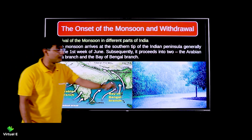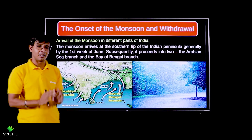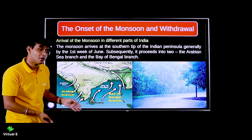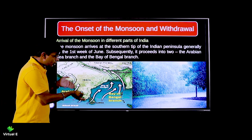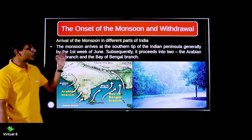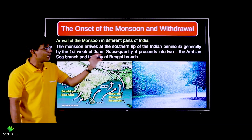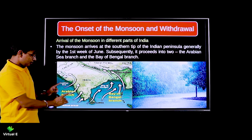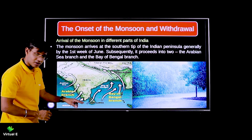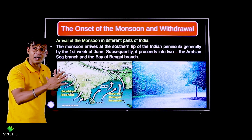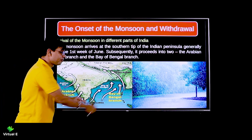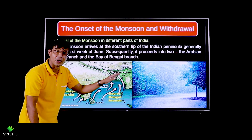Monsoon arrives at the southern tip of the Indian peninsula. The winds coming from the Indian Ocean via Madagascar logically hit the southern part first, then move inland from south to north. In the first week of June, monsoon hits the southern coast and then proceeds into two branches - the Arabian Sea branch and the Bay of Bengal branch. Importantly, both branches hit the coast around the same time.